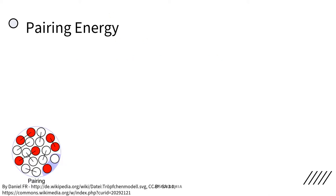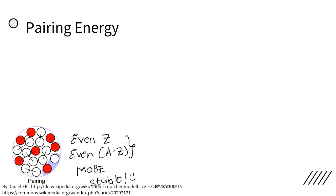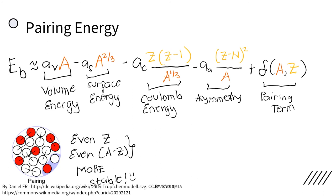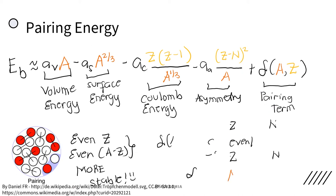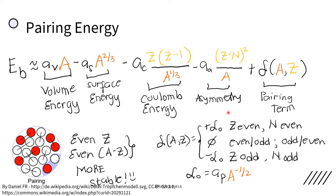Now, we consider the tendency of proton pairs and neutron pairs to occur. An even number of particles is more stable than an odd number due to spin coupling. This term is known as the pairing term, and it depends on the value of the proton number Z and the neutron number N. The delta term is positive delta-naught if Z is even and N is even. If we have even-odd or odd-even numbers of protons or neutrons, the value of delta is zero. If Z is odd and N is odd, we have negative delta-naught, where delta-naught equals a constant Ap times A raised to negative one-half.